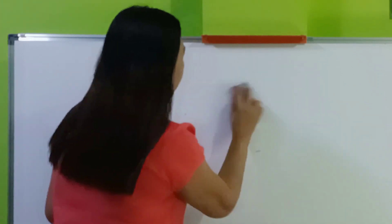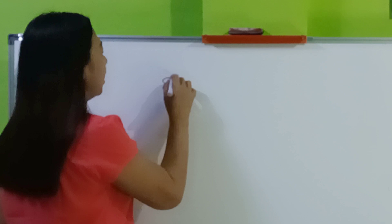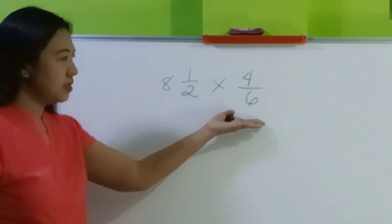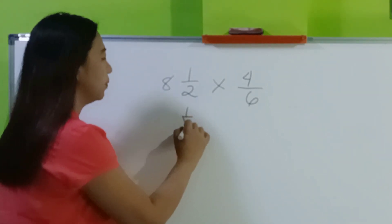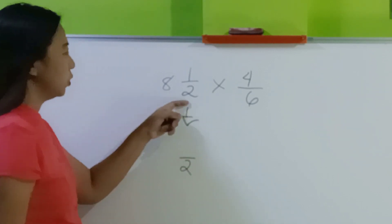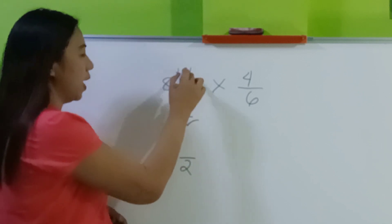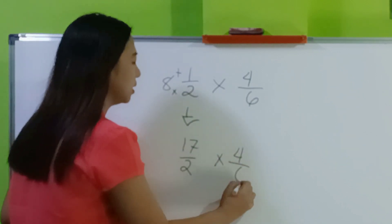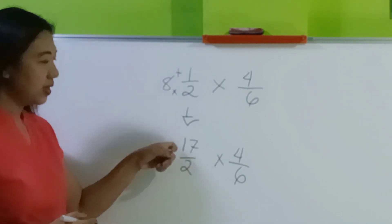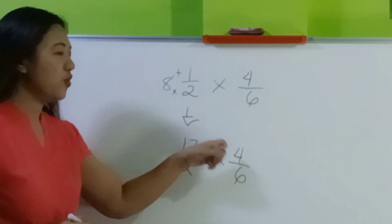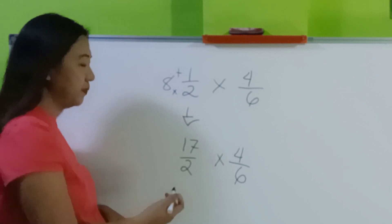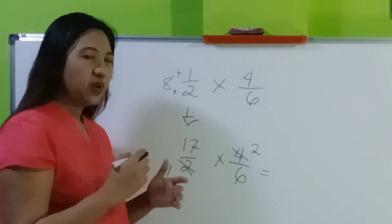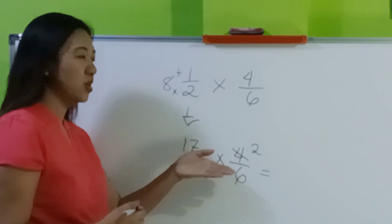What if one number is a mixed number and the other is a proper fraction? For example, 8 and 1/2 times 4/6. Only the mixed number needs to be changed to an improper fraction, since 4/6 is already a proper fraction. Copy the denominator 2: 2 times 8 is 16, plus 1 is 17. Then just copy the proper fraction 4/6. We can cancel: 2 and 4 share a common factor of 2, so 2 divided by 2 is 1, and 4 divided by 2 is 2.